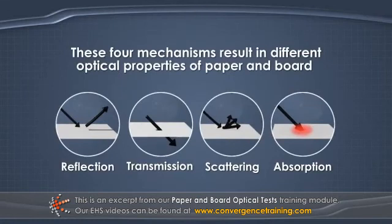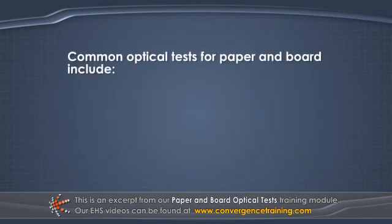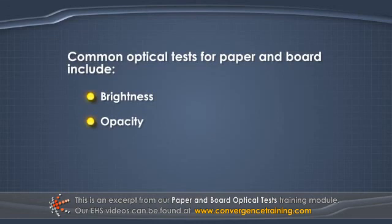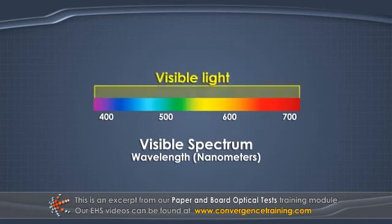These four mechanisms result in the different optical properties of paper and board. Common optical tests for paper and board include brightness, opacity, formation, and color. For these tests, only visible light with wavelengths between 380 and 720 nanometers is considered.